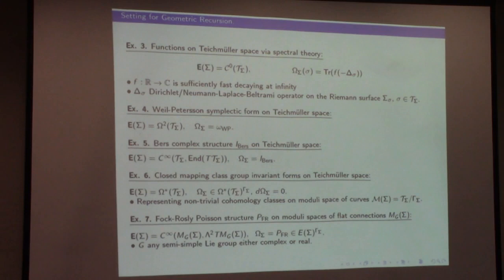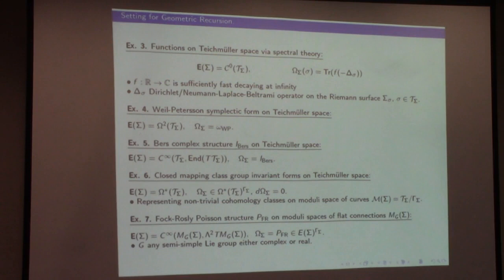Another more interesting example: take the Laplace-Beltrami operator. Since I have a boundary, I can take either Dirichlet or Neumann boundary conditions, look at the spectrum of this operator, apply some fast-decaying function to the spectrum, take the trace, and this gives a well-defined continuous function on Teichmüller space. If you take an indicator function on some interval, you get the percentage of the moduli space that has eigenvalues in that interval.